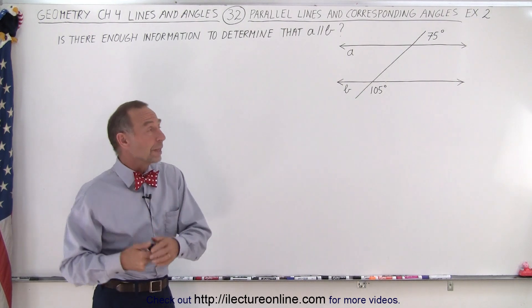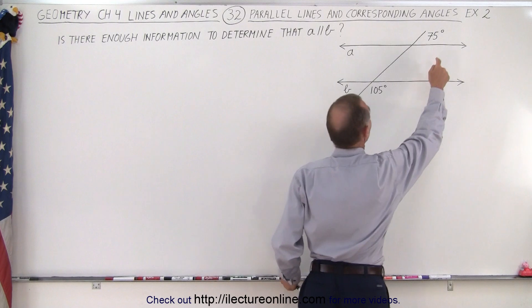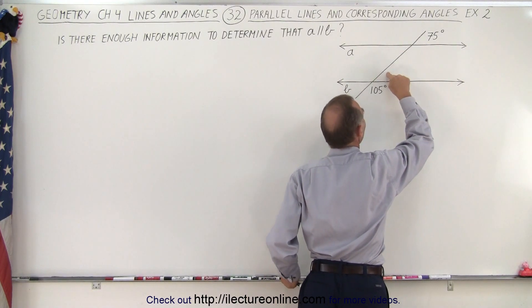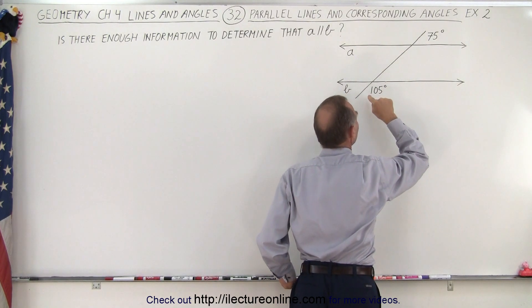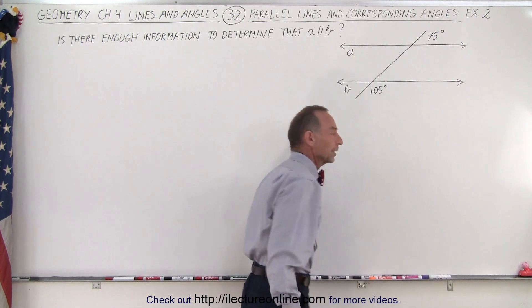Well, we're always looking for corresponding angles. We're given the angle 75 degrees here but we don't have the angle here, and then we're given this angle here but we're not given its corresponding angle there.